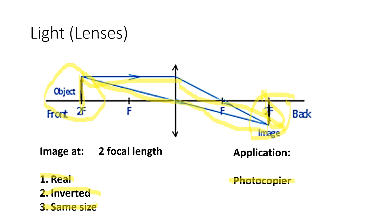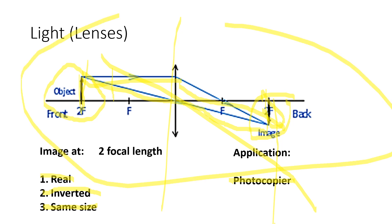What happens in exam questions is they'll draw probably one ray like that and one like that, and ask you to complete the diagram. Or they'll draw the object and the image and ask you to complete the diagram. Either way, you need to memorize and get used to drawing the diagrams, and then from the diagram, memorize the three properties and the application. That's all for lenses.